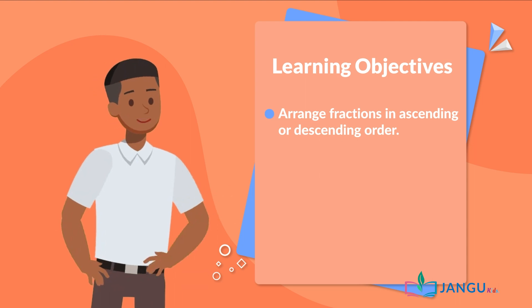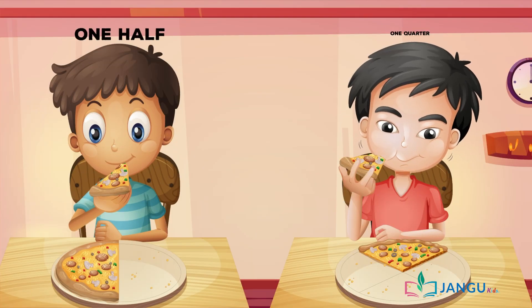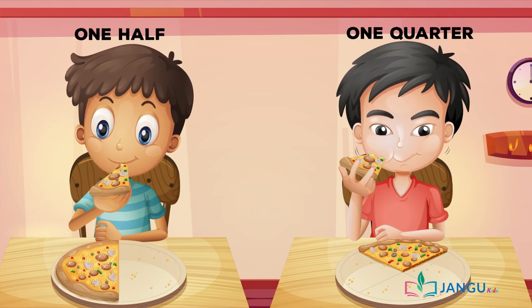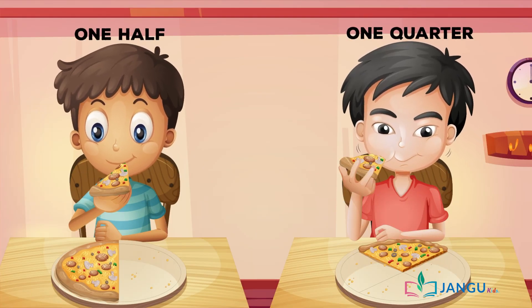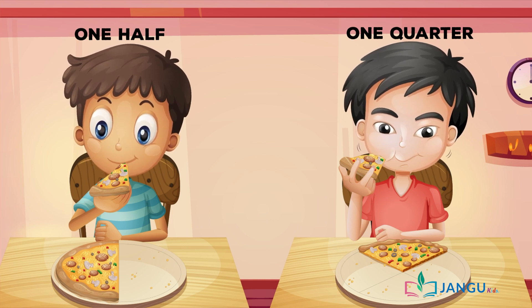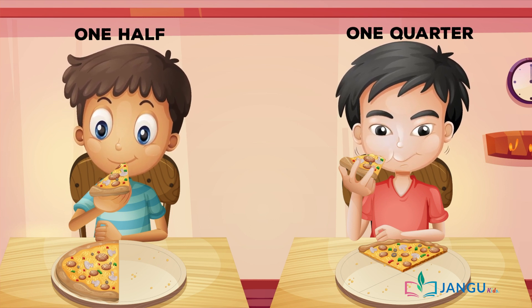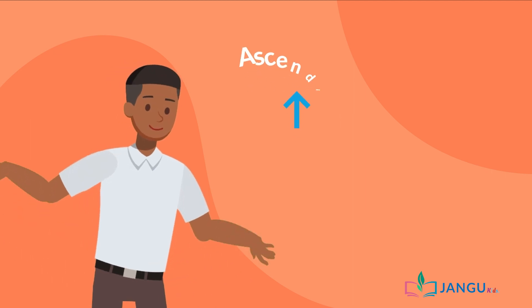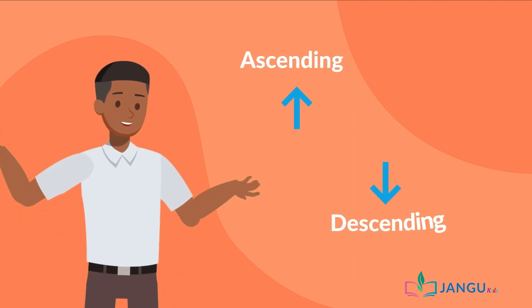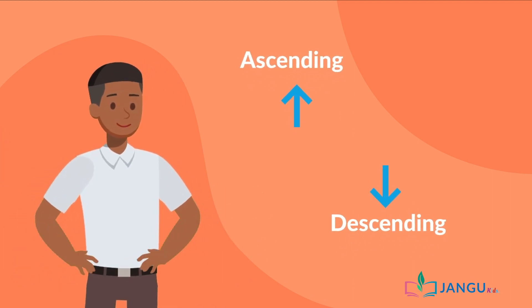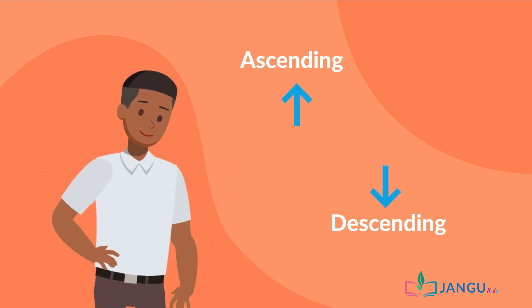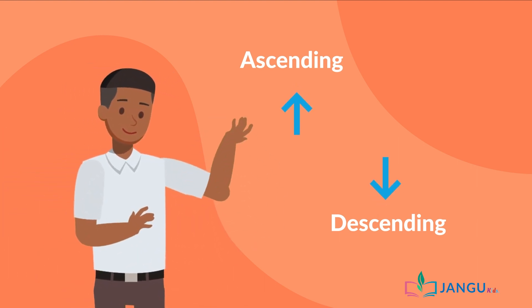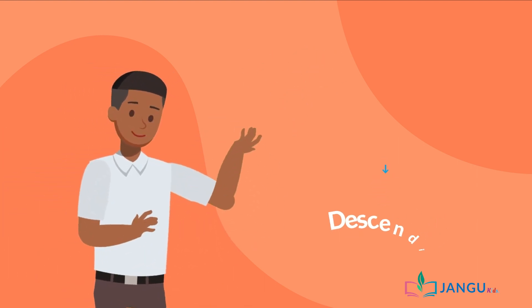In our previous lesson we learnt about the types of fractions, equivalent fractions and the application of equivalent fractions in everyday life. Now, fractions like whole numbers can be arranged in ascending or descending order. However, unlike whole numbers, ordering fractions can be a bit tricky.